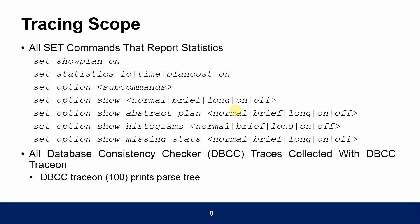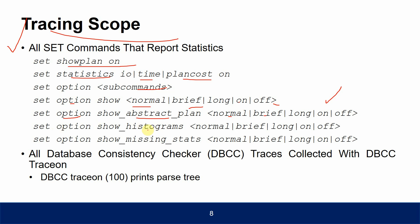Tracing scope: all set commands that report statistics are included in tracing. The scope includes set commands such as 'set showplan on', 'statistics IO', 'time', 'plan cost', 'option show normal/brief/long/on/off', 'set option show abstract plan', 'set option show histograms', 'set option show missing stats', and all DBCC traces collected with 'dbcc traceon', for example 'dbcc traceon 100' which prints the parse tree.